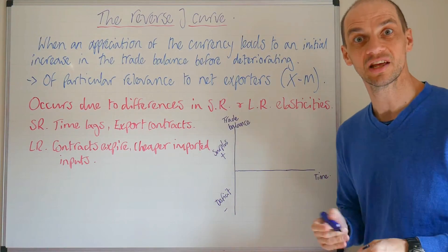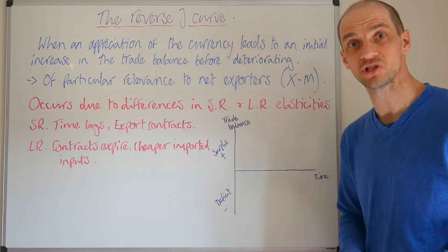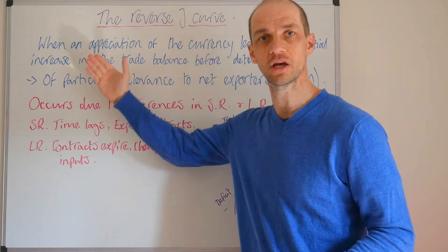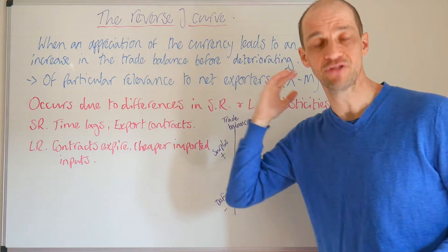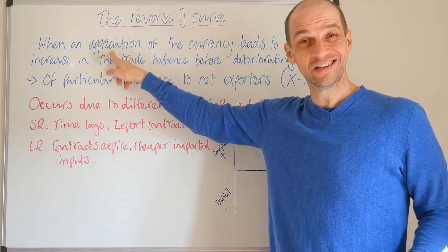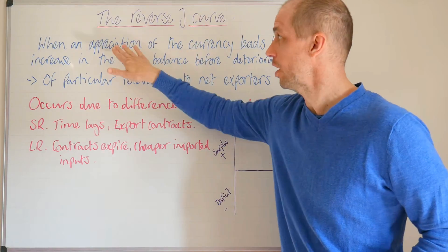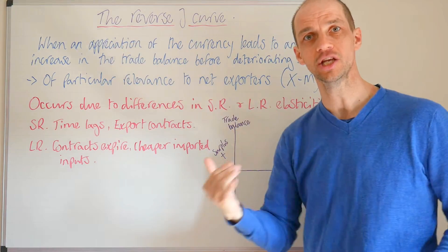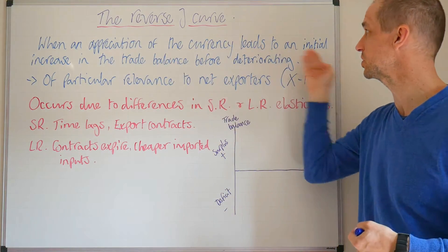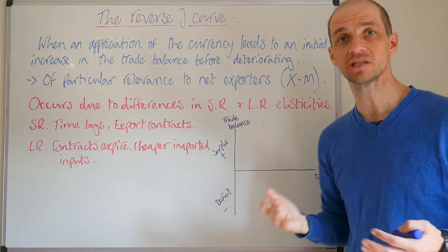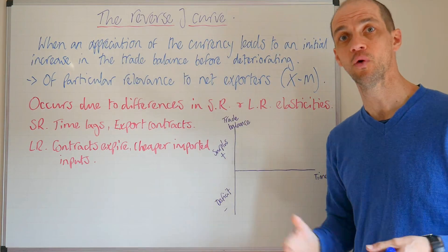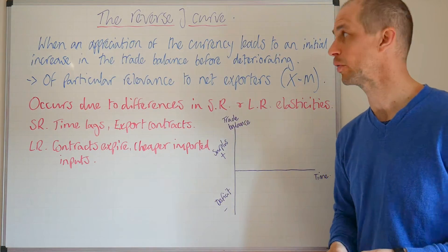Hi guys, so let's now take a look at the reverse J curve. When it comes to the reverse J curve, this is where we have the exact opposite scenario playing through. So it's not a depreciation now, it's an appreciation of the currency. So when an appreciation of the currency leads to an initial increase in the trade balance before deteriorating.